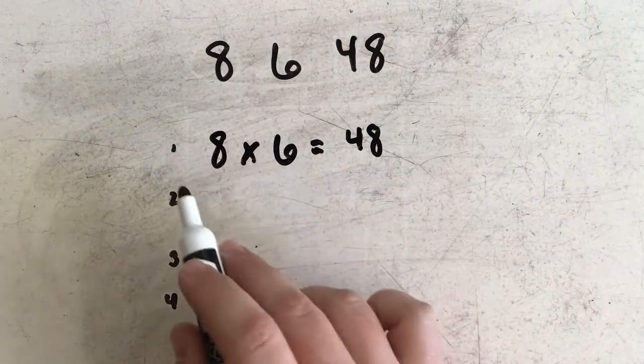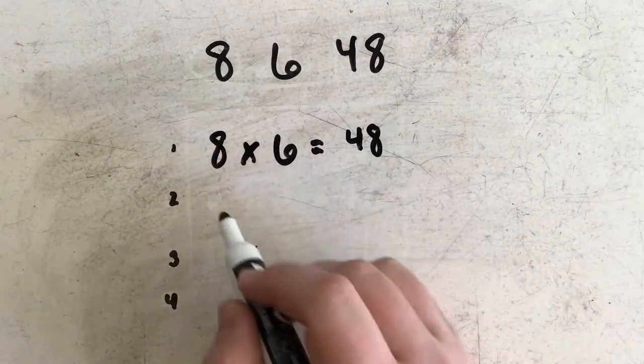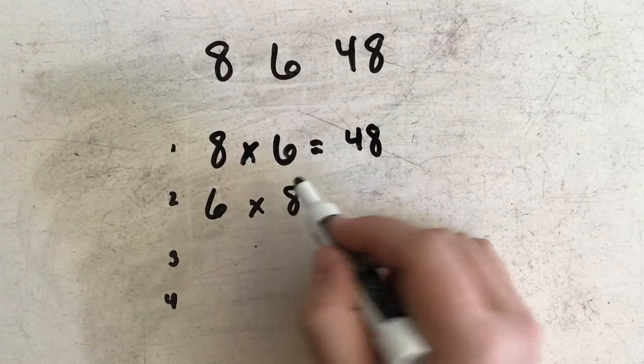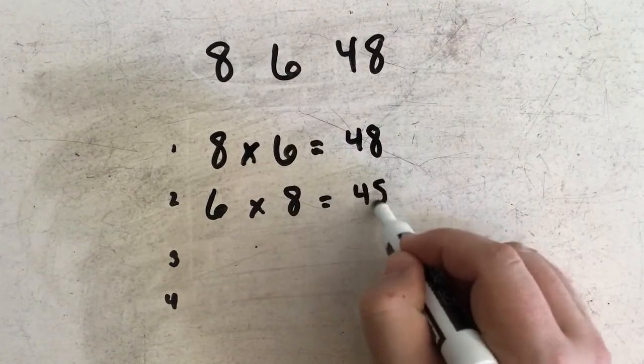Again, I could flip these two around and still get the same answer. So I could say 6 times 8 is equal to 48.